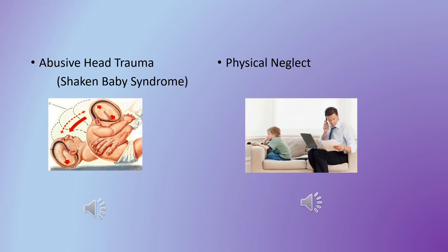Physical neglect is where a child may appear unwashed, thin, malnourished, or dressed inappropriately for the weather outside — for example, wearing shorts and a t-shirt without a proper winter coat in cold weather. Other signs of neglect include failing to bring a child in for immunizations. If somebody refuses immunizations, document why they're refusing and that education has been done. Failure to bring a child in at all can be considered physical neglect.